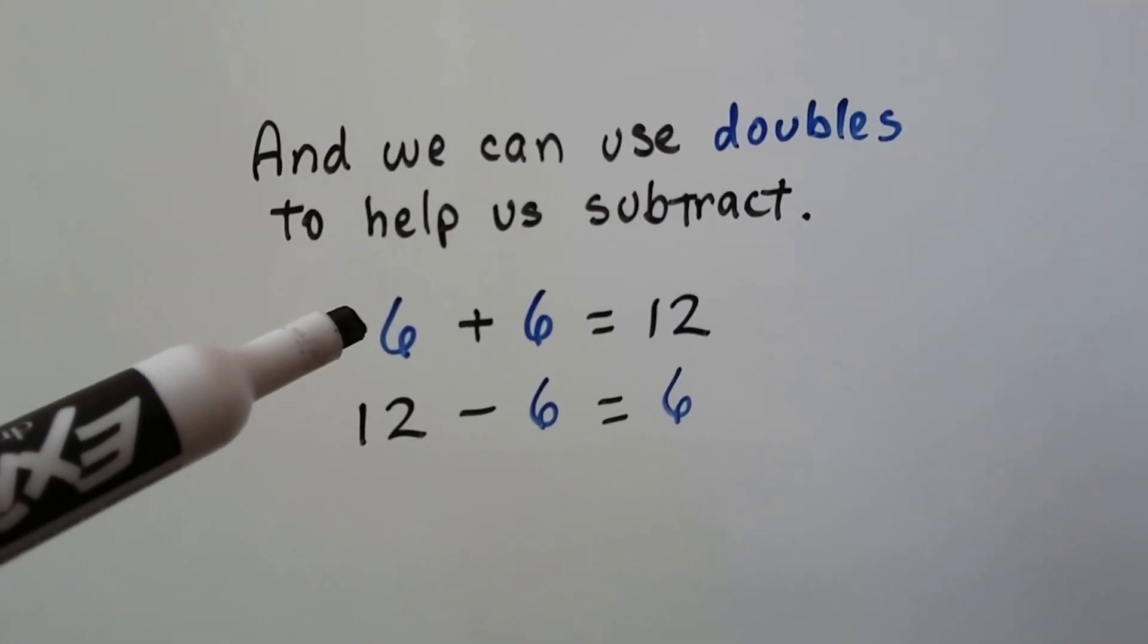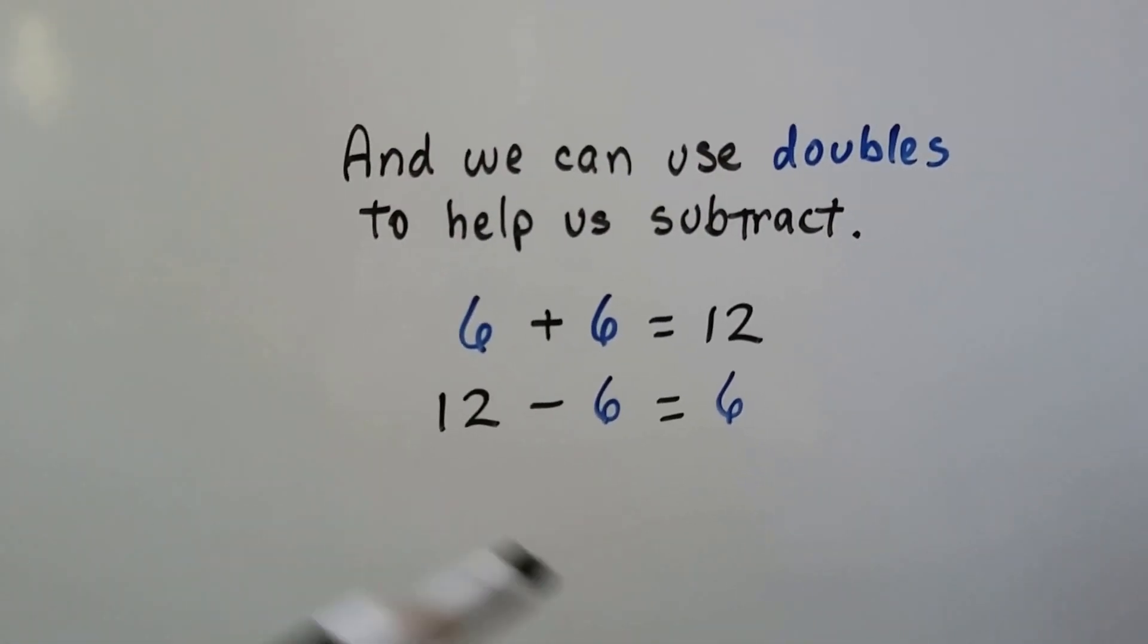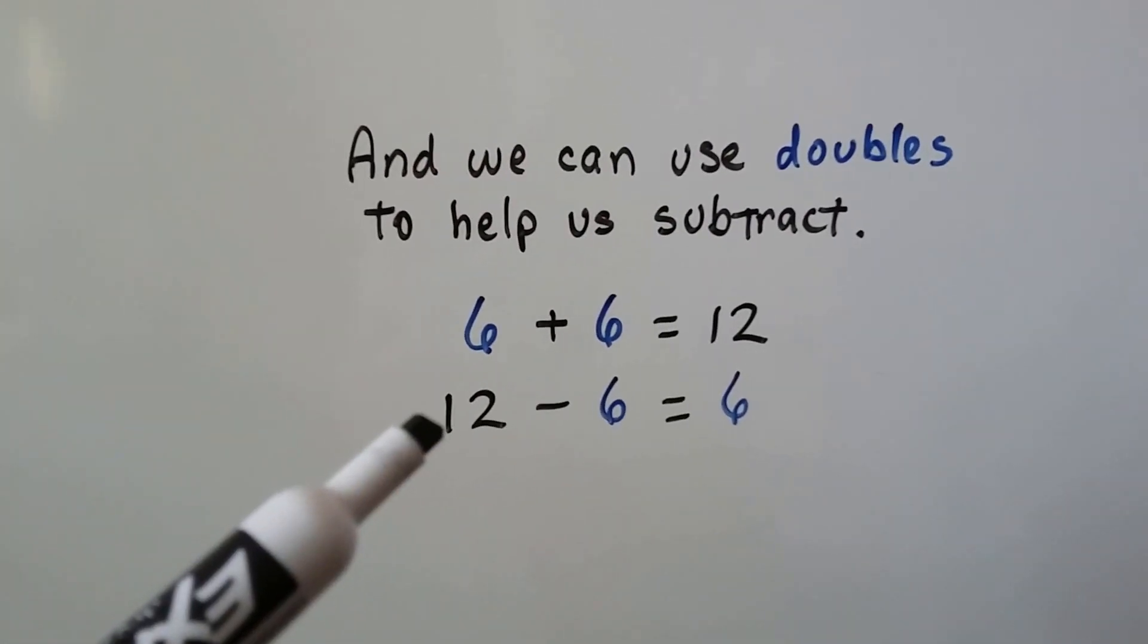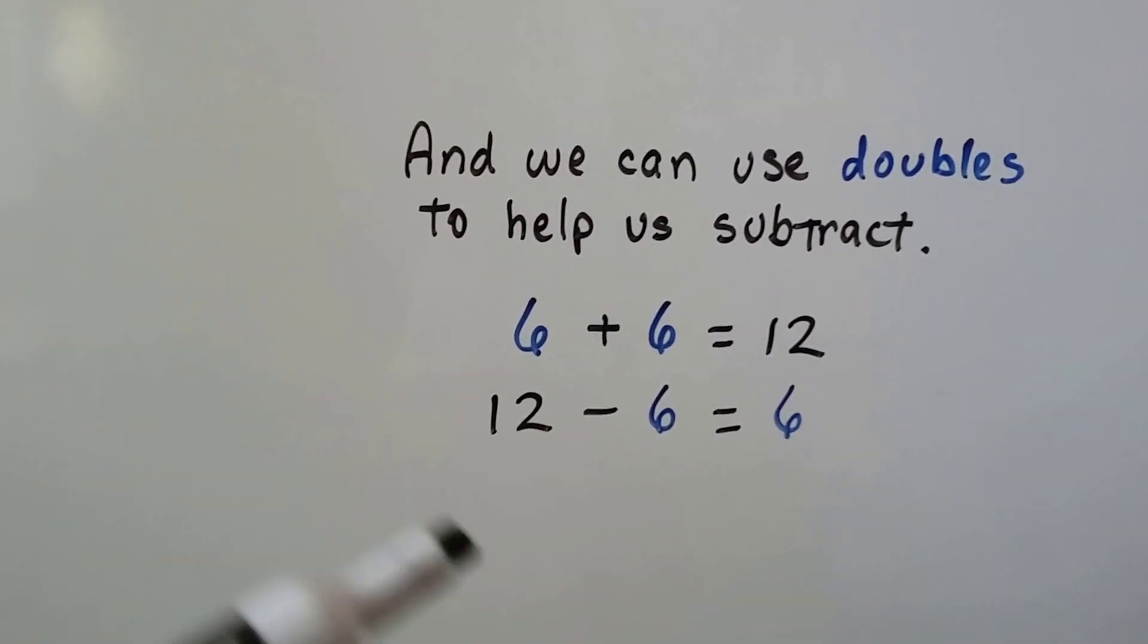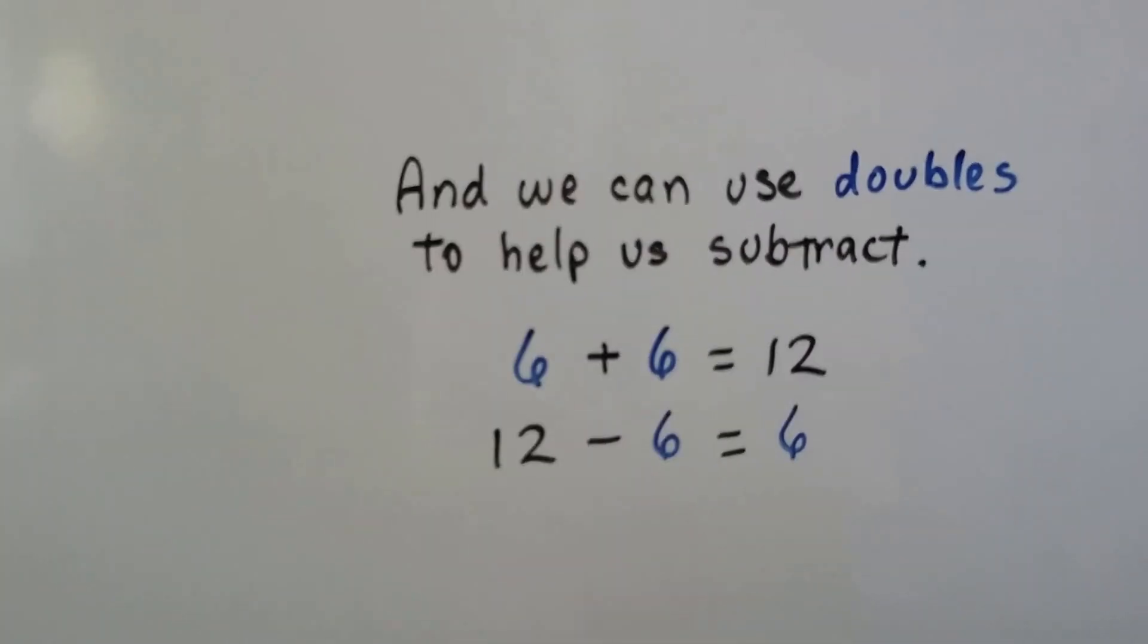6 plus 6 is 12. So 12 was the sum. It becomes our minuend. 12 minus 6 equals 6. And we can see our doubles in the addition sentence and in our subtraction sentence.